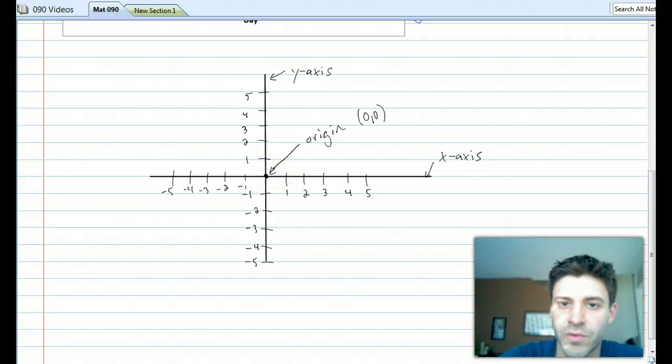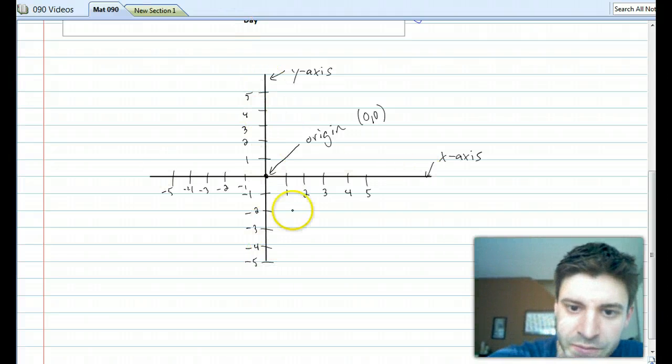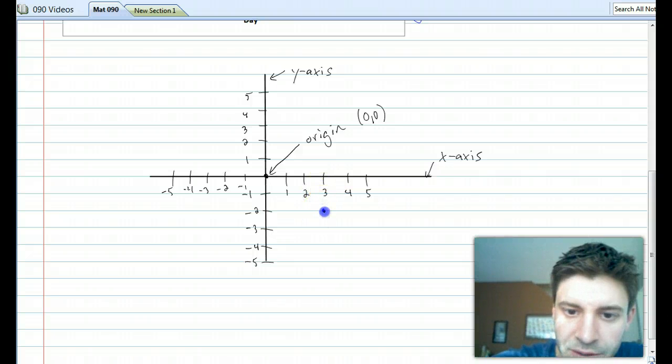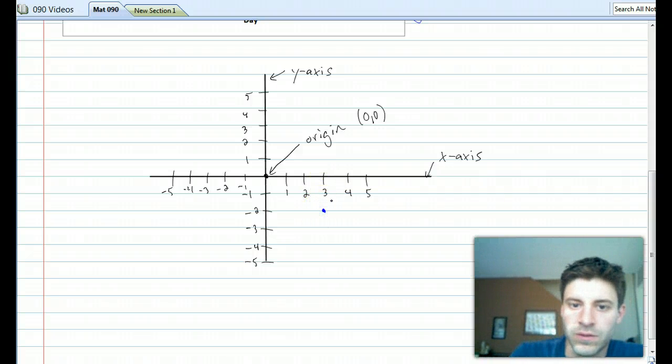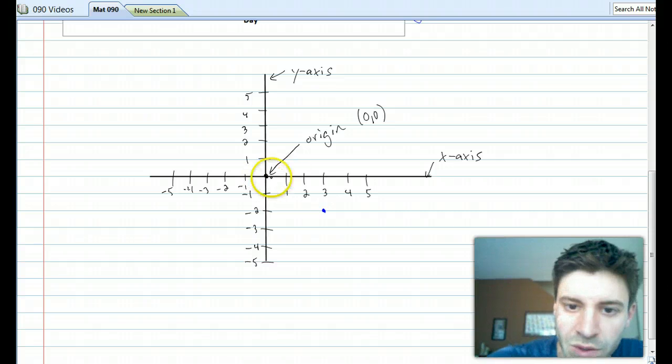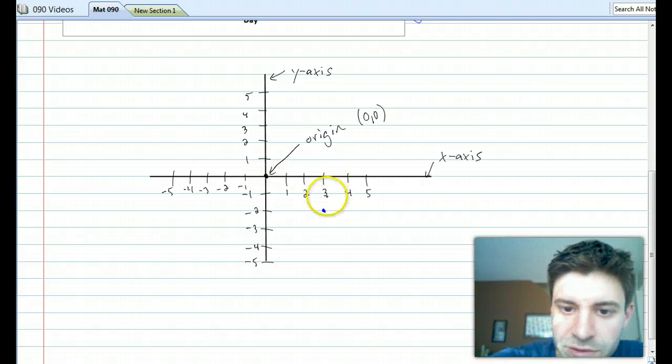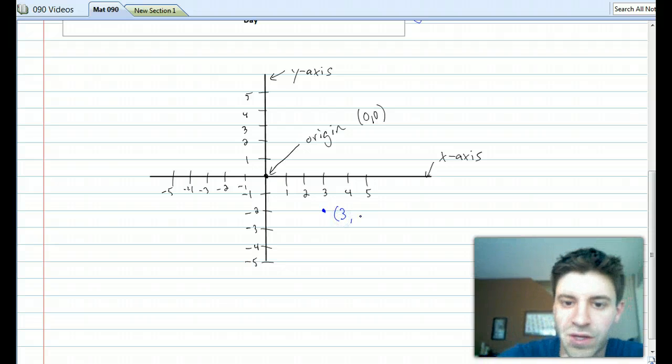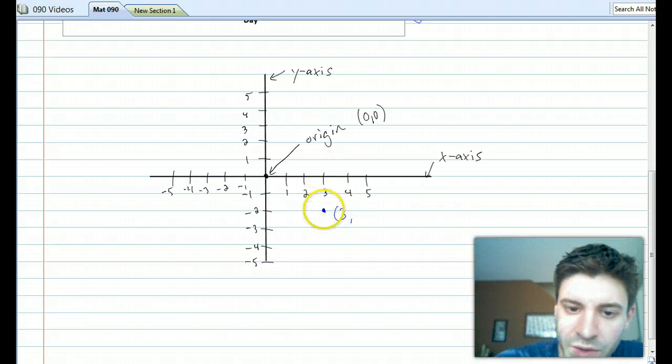Now let's just pick a random point in this x, y plane, as we call it. Let's pick this point right here. We're going to label that with the x coordinate first, that's a 3, and a y coordinate, second, negative 2.